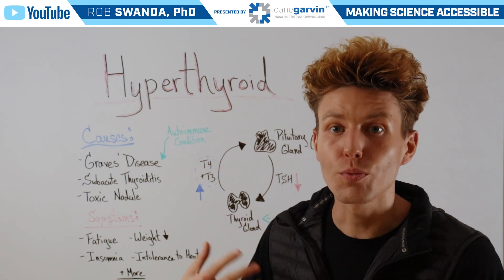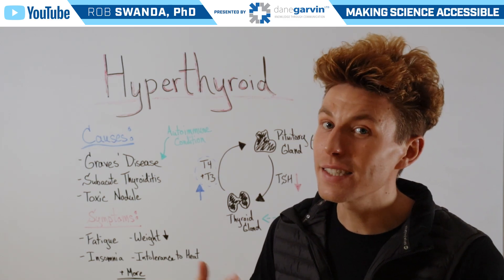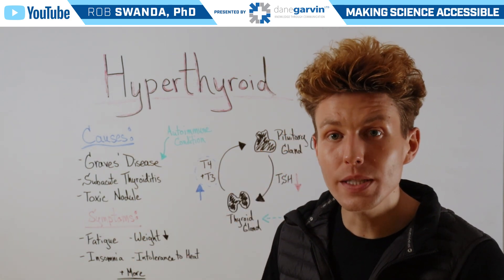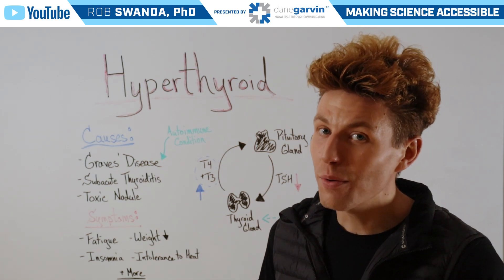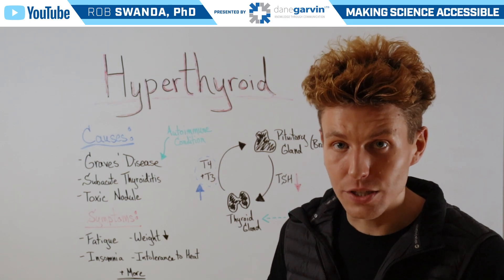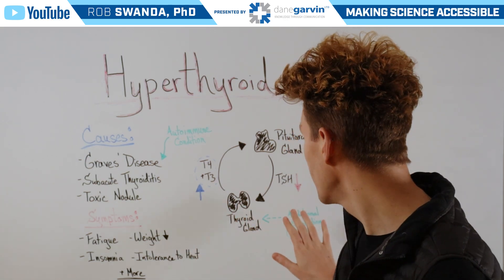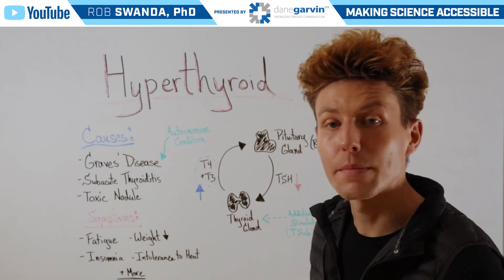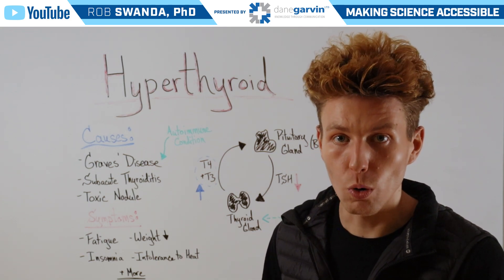Once those hormone levels rise back in the body, this sends a stop signal back to the pituitary gland to reduce the amount of thyroid stimulating hormone being released. However, during a hyperactive thyroid condition, the thyroid gland is actually getting an additional stimuli — this could be from thyroid stimulating antibodies that are telling it to release more and more hormones.